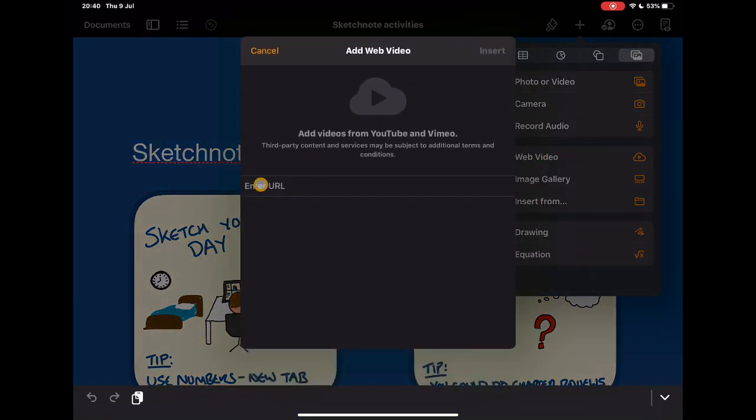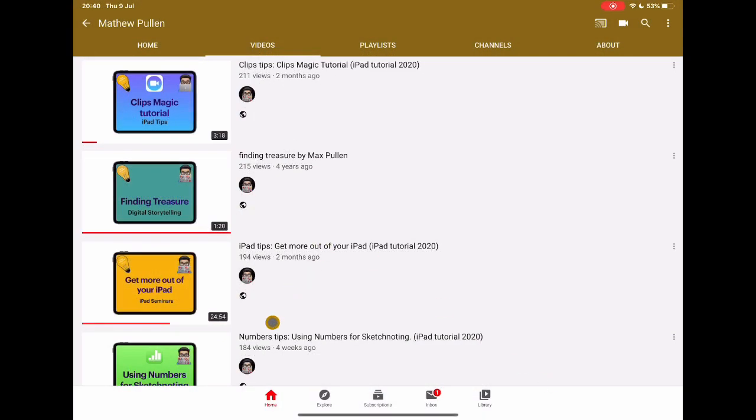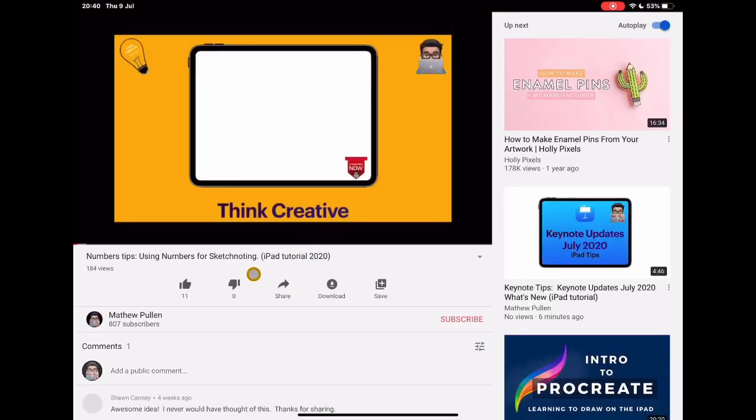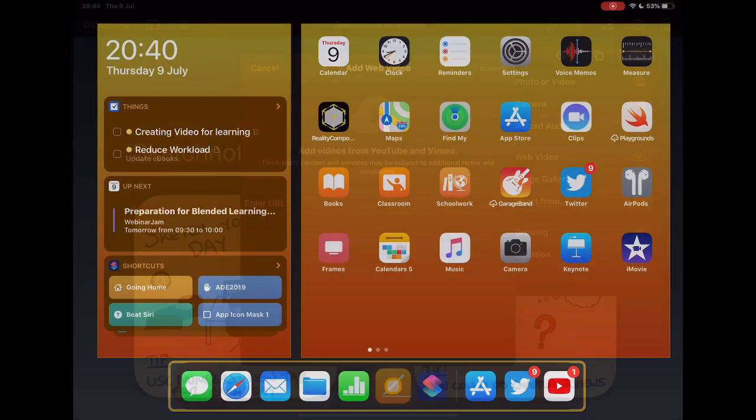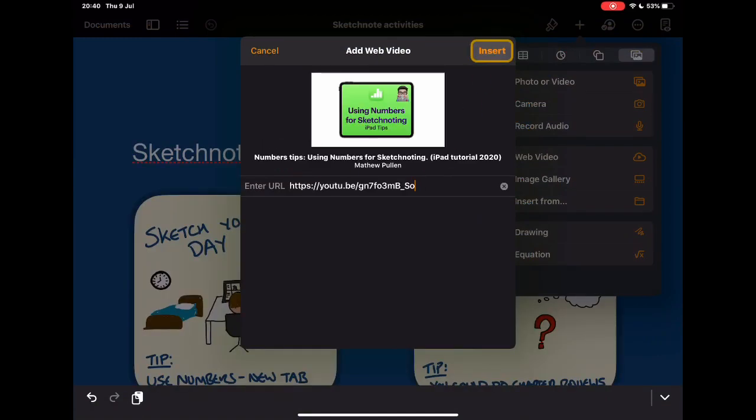So if I tap on this I have the option to enter a URL. So let's say in this instance this is a pages document about using numbers as a sketchnoting tool. Well do you know what I've got a video on that so I'm going to get that video. I'm going to share and copy that link. I'm going to jump into pages and I'm going to paste that in and then it's going to tap insert.